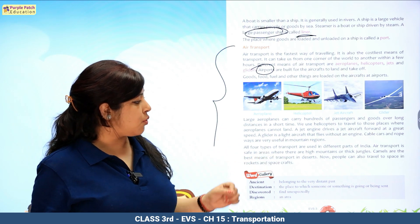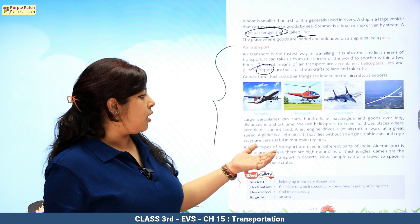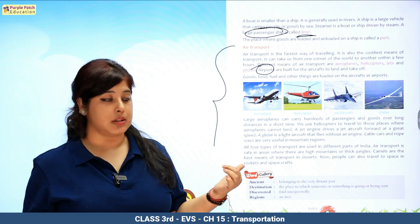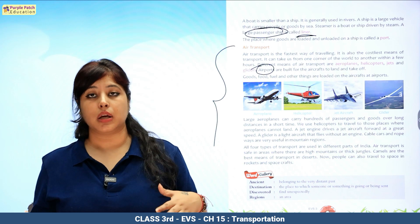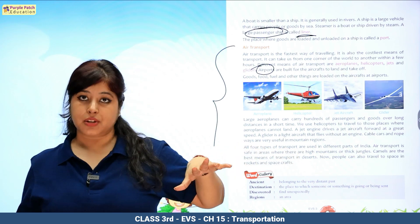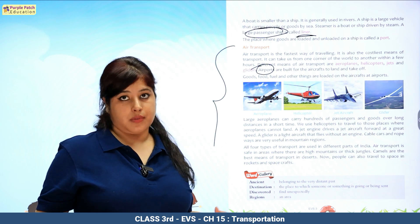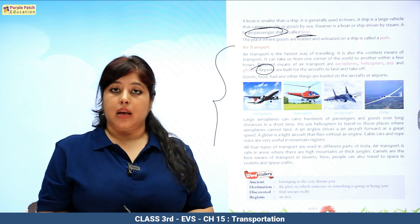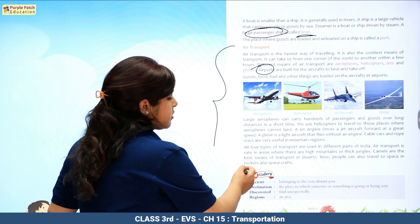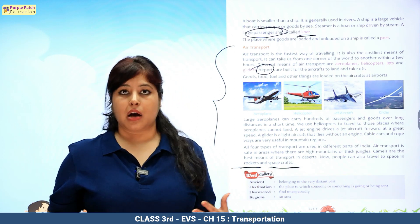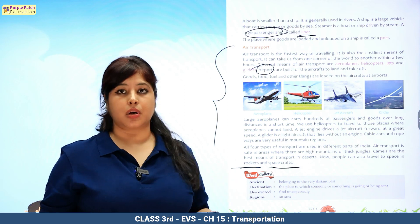All four types of transport are used in different parts of India. Air transport is safe in areas where there are high mountains — where roads cannot be built easily and rails cannot go. In thick jungles also, air transport is used. Camels are the best means of transport in deserts — camel is the ship of the desert, so in desert areas we use camels. People can also travel to space in rockets and spacecraft — jo log moon pe ya space mein jaate hai, woh in transport ka use karte hai.